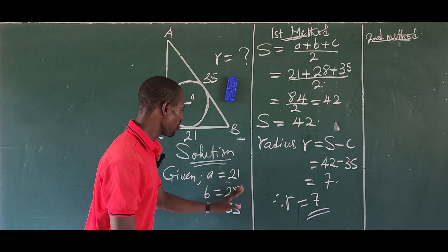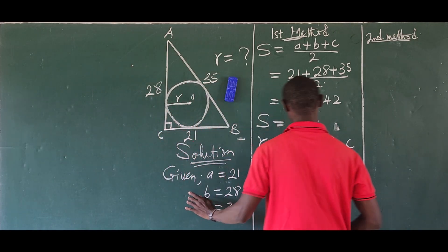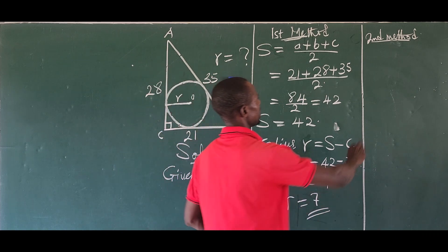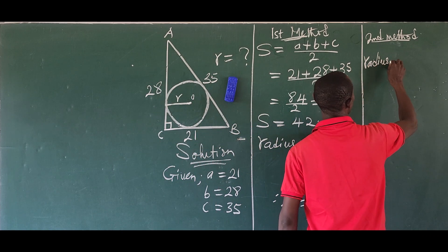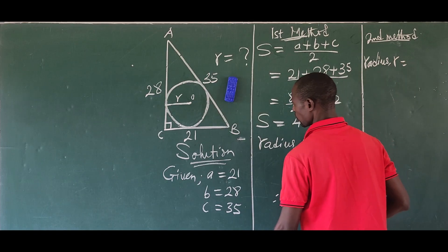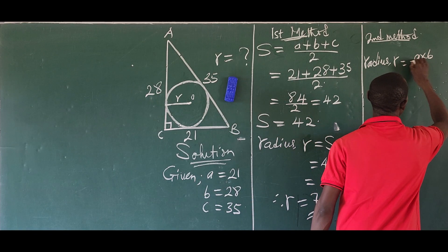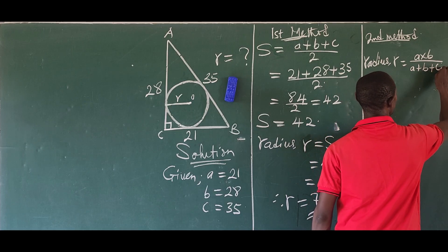What is the relationship? The relationship between a, b, c and the radius is this: we have our radius r equals (a × b) / (a + b + c). That is just the relationship.